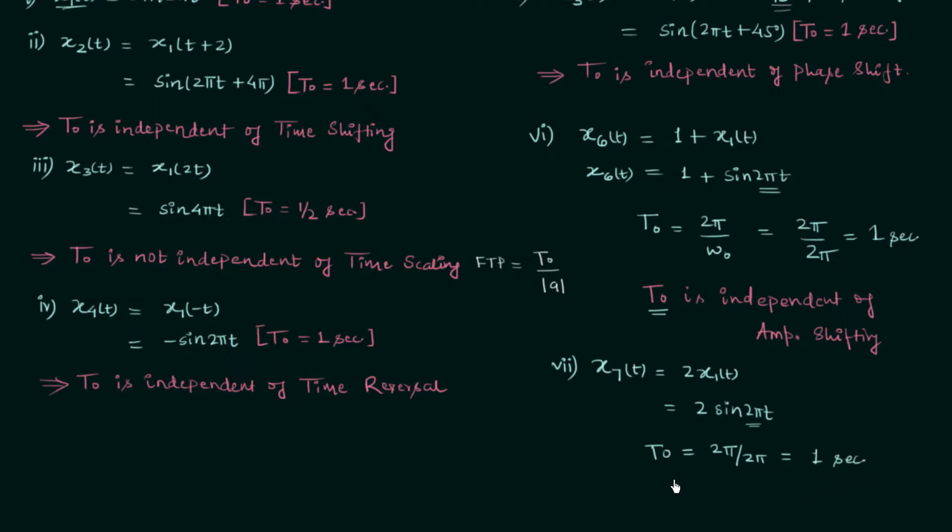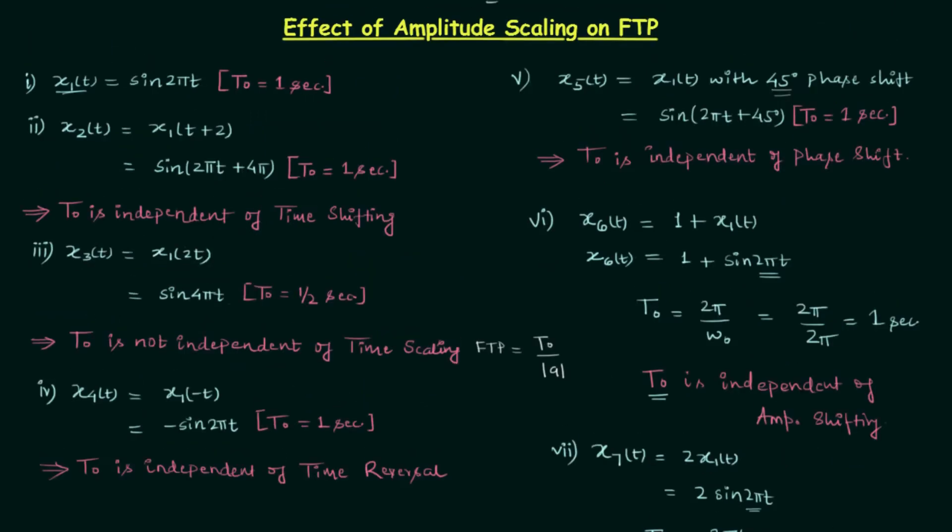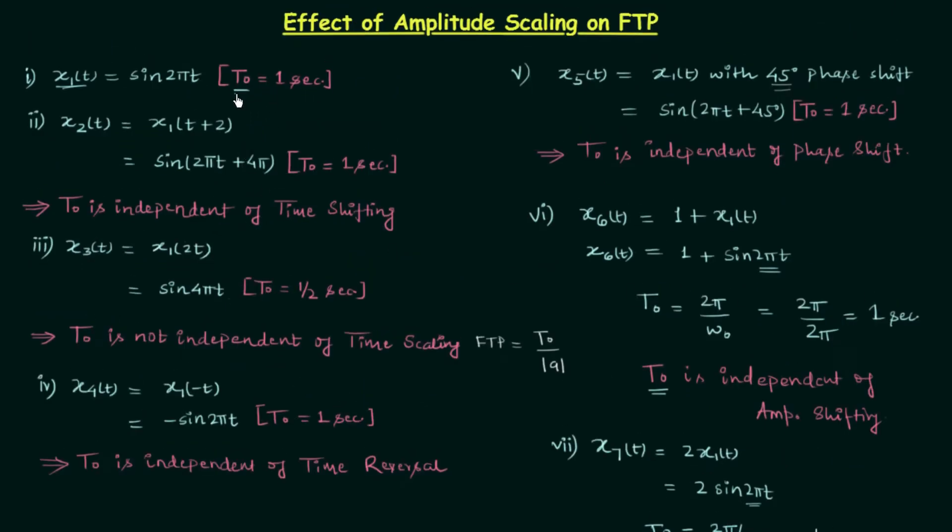So 1 second is the fundamental time period of this signal which we have obtained after performing the amplitude scaling. And if you see the original signal which is x1(t), you will find T0 was 1 second.